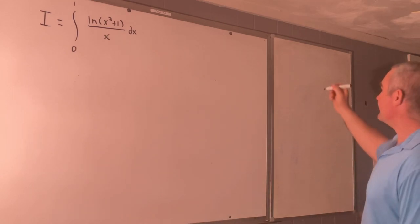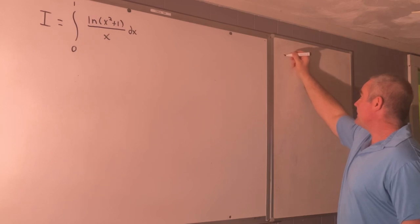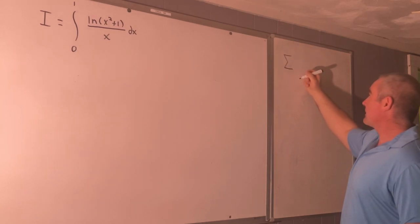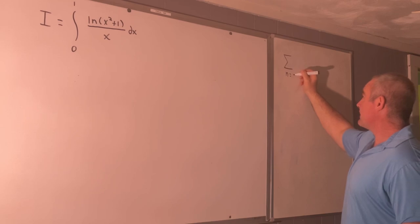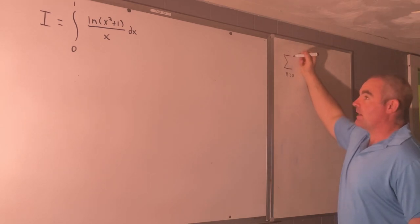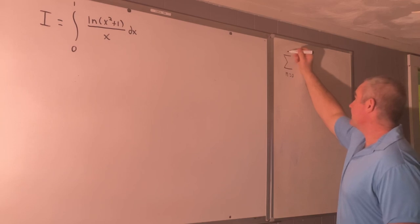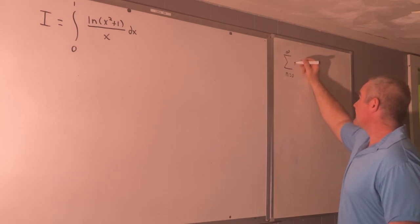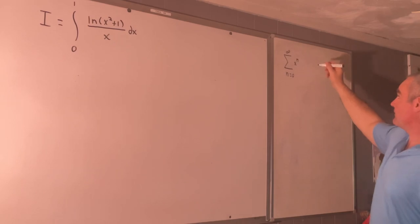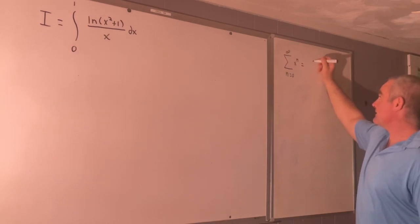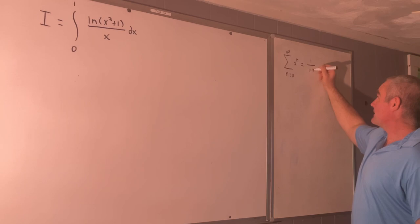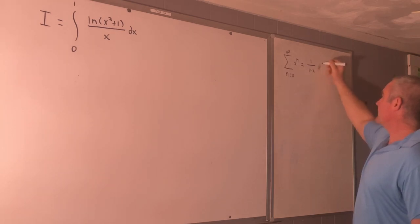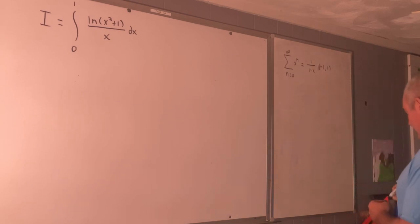So what we'll do is we're going to start with this known fact. The sum from n equals 0 to infinity of x to the n is equal to 1 over 1 minus x on negative 1 to 1. And from here we can get all sorts of other things.